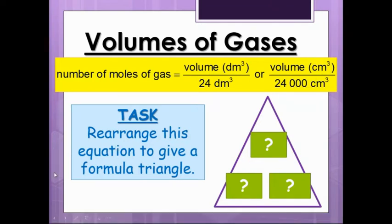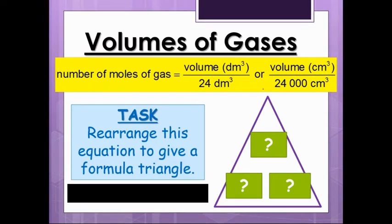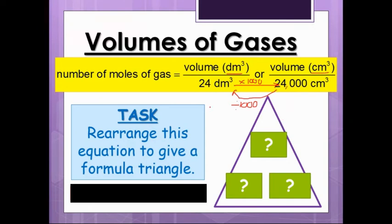So one decimetre cubed is a thousand centimetre cubed. So to get from decimetre cubed to centimetre cubed, times by a thousand. Going from there to there, you divide by a thousand. In a question, they'll either give you the units as decimetre cubed or centimetre cubed. So one of the first things we'll have to do with these is figure out what the units are. And then if it's in centimetre cubed, you divide it by 24,000. If it's in decimetre cubed, you just divide it by 24.